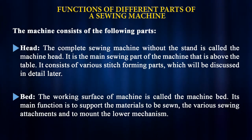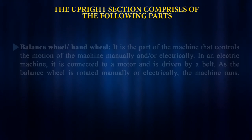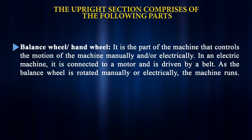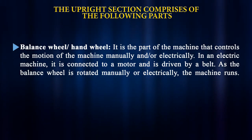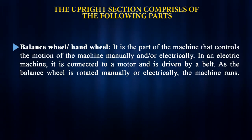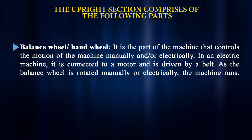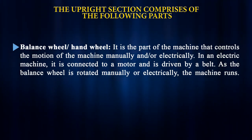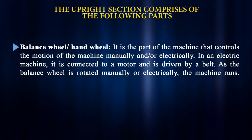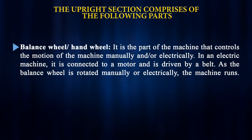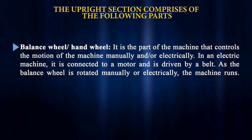The upright section of the machine comprises the balance wheel, also called the hand wheel. It is the part that controls the motion of the machine manually or electrically. In the hand operated machine the balance wheel is operated by hand, while in the electronic or treadle machine it is operated electrically or by feet. In an electric machine it is connected to a motor and driven by a belt.